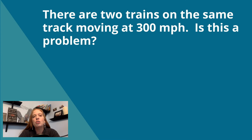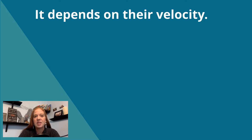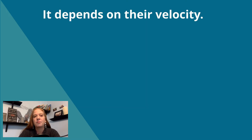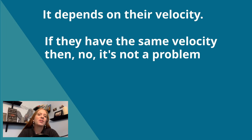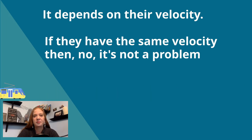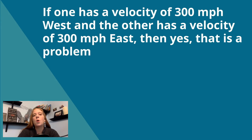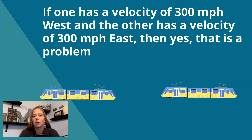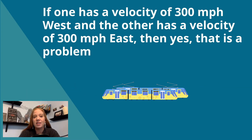There are two trains on the same track moving at 300 miles per hour. Is this a problem? It depends on their velocity. If they have the same velocity, then no, it's not a problem. If one has a velocity of 300 miles per hour west and the other has a velocity of 300 miles per hour east, then yes, this is a problem.